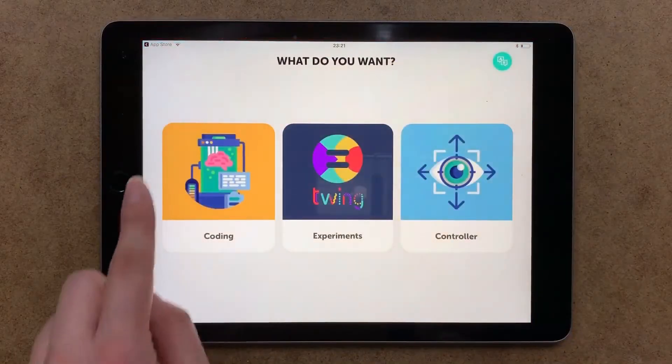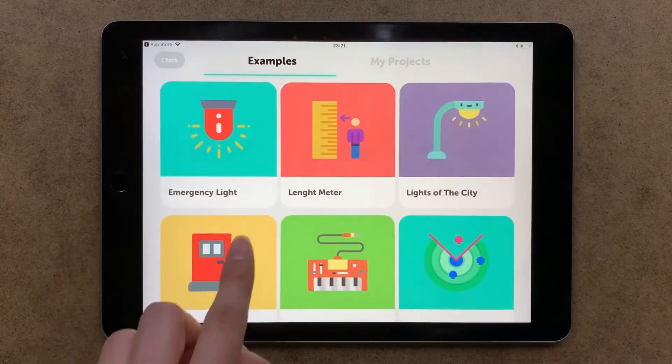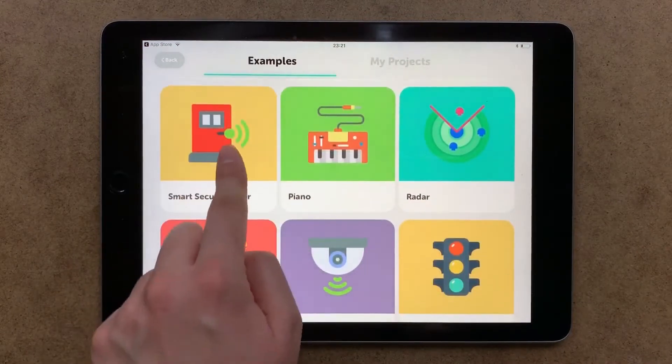Download the app to your control center and sign up. Tap coding, examples, and then smart security gate.